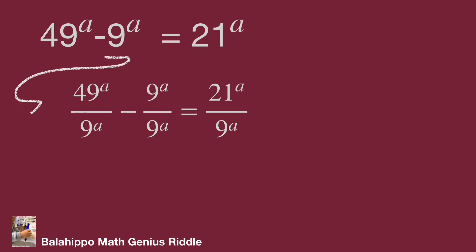Then substitute 49 by 7 squared, 9 by 3 squared, and 21 by 7 times 3 into the equation.